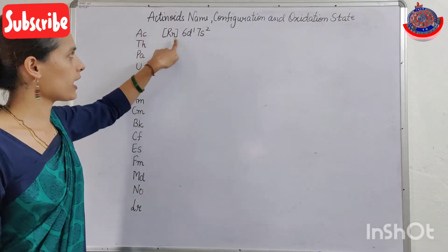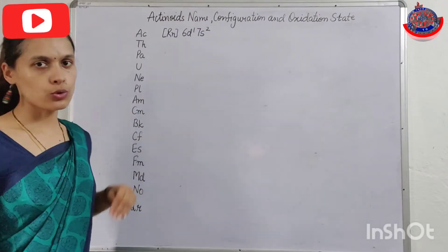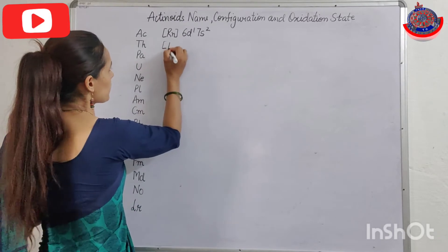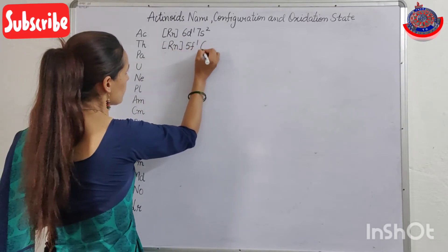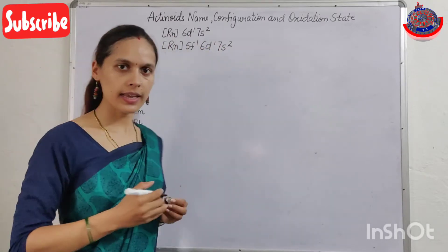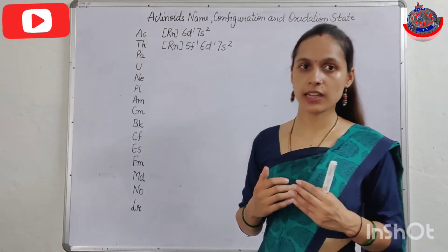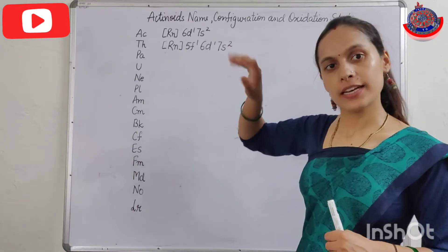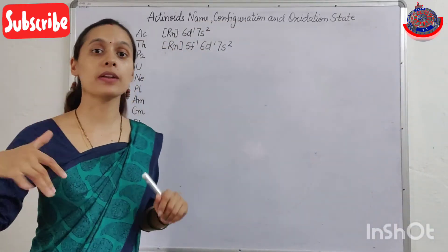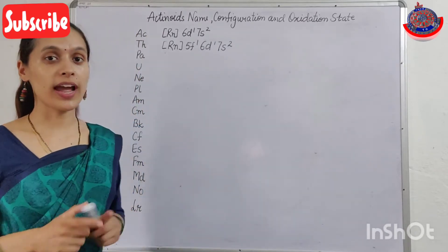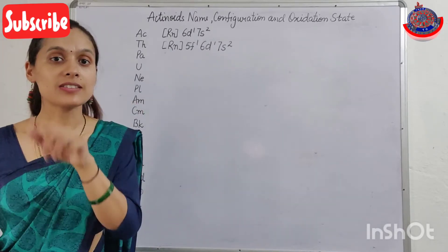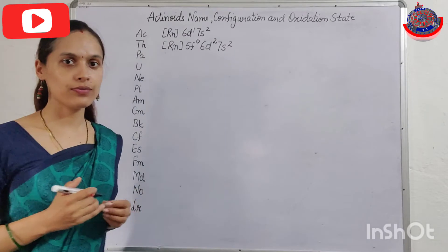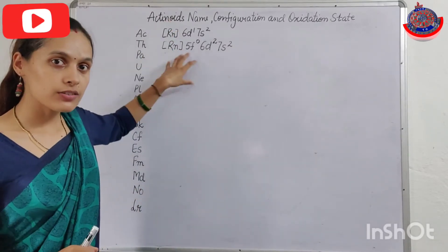So Actinium's configuration is: [Rn] 6d1, 7s2. After Actinium comes Thorium — one more electron is added. Because it is an F-block element, it should go to F. But here you skip number 1 and write 2 in the D orbital instead of F. So Thorium's configuration becomes: [Rn] 5f0, 6d2, 7s2. This is a special case.